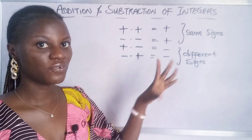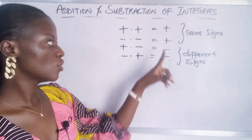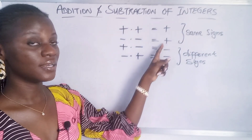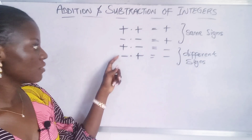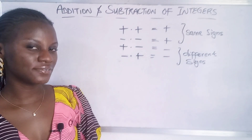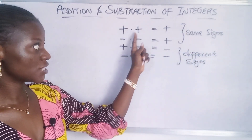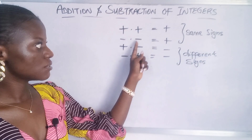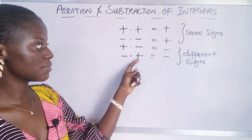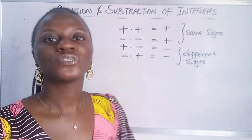Note this before we dive into adding and subtracting integers: when you have the same signs multiplied together, you get a plus sign. When you have different signs multiplying each other, you get a negative sign. So plus times plus gives you plus, minus times minus gives you plus — because it's the same sign. But plus times minus, or minus times plus, gives you a negative sign.